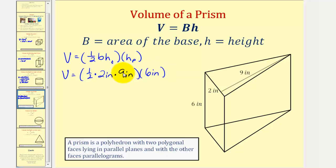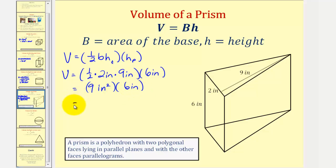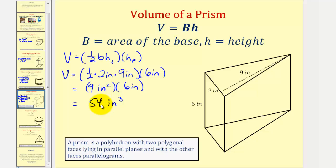Two times nine is 18. 18 times one-half is nine. So we have nine square inches times six inches, which would be 54 cubic inches. So 54 cubic inches would fit perfectly inside our triangular prism.